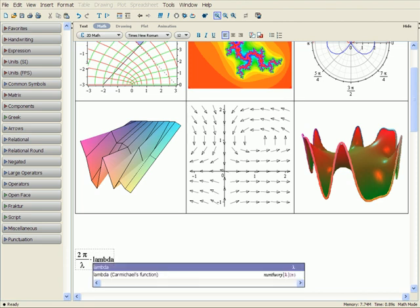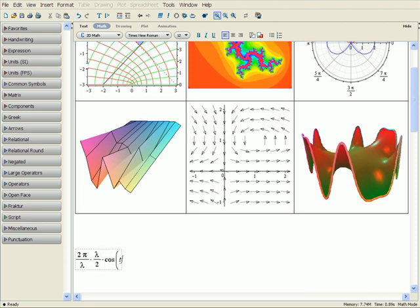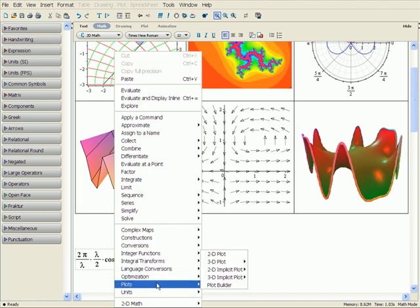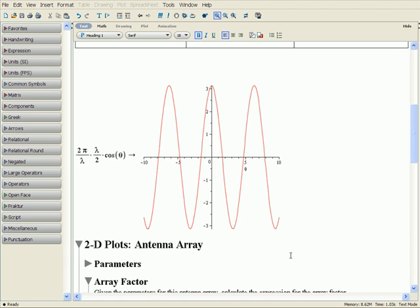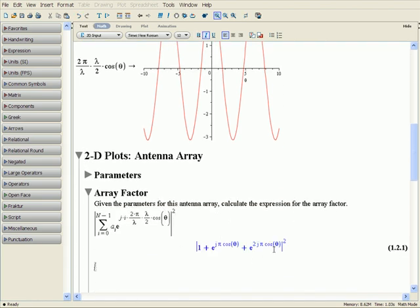Plots can be created quickly. For example, let's plot the phase difference of an antenna array. Simply select 2D Plot from the context-sensitive menu. Next, let's plot the array factor of our antenna array.